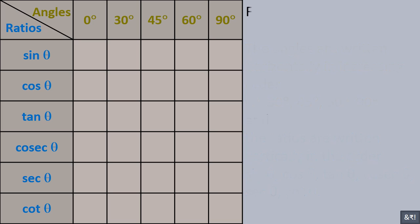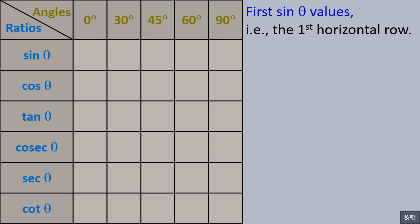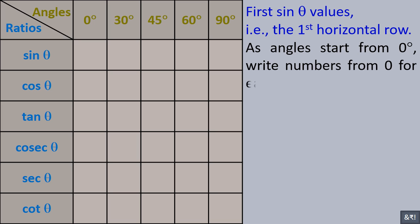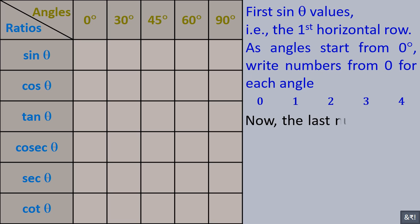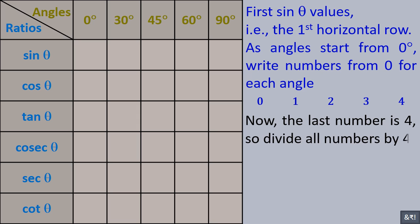First, the sine theta values — that is, the first horizontal row. As angles start from 0 degree, write numbers from 0 for each angle: 0, 1, 2, 3, 4. Now, the last number is 4.